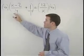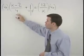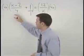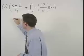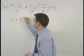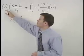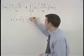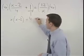When multiplying 4x times x minus 2 over 4, the 4s cancel and we have x times parentheses x minus 2. 4x times positive 1 is positive 4x.